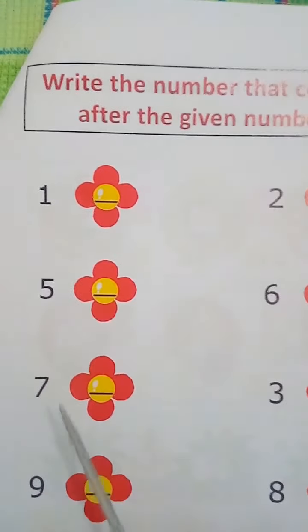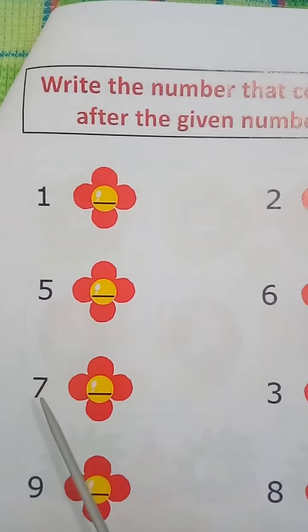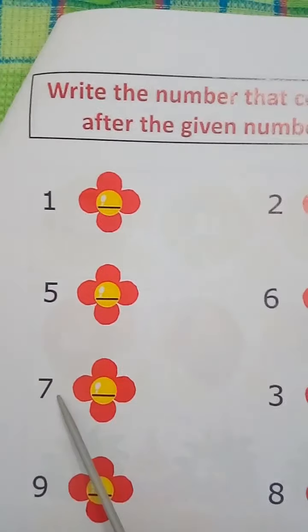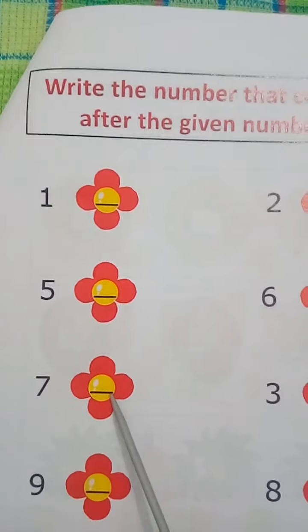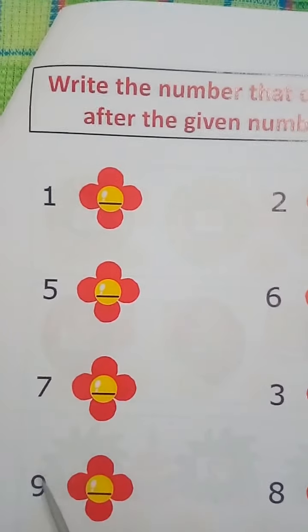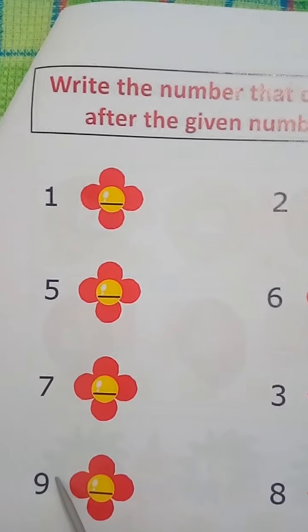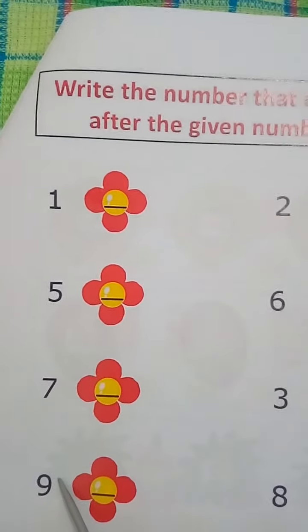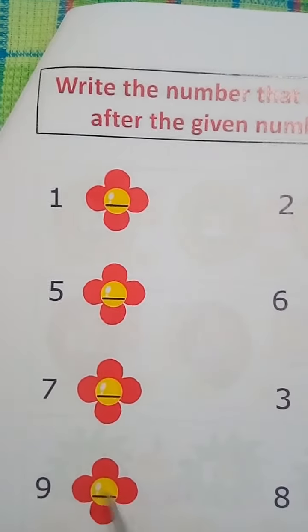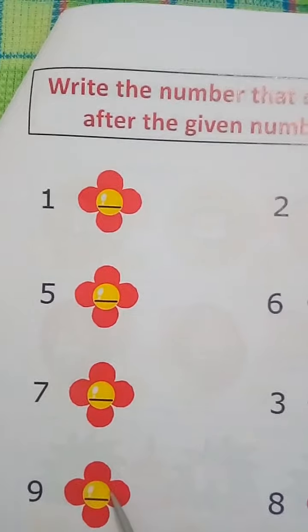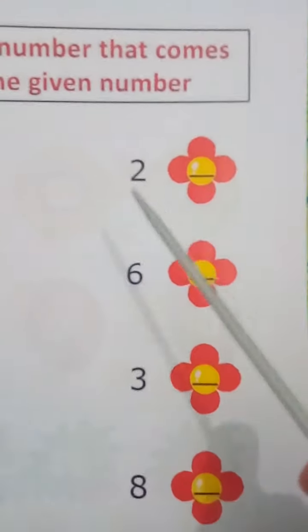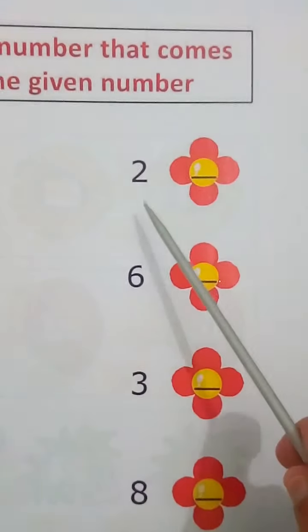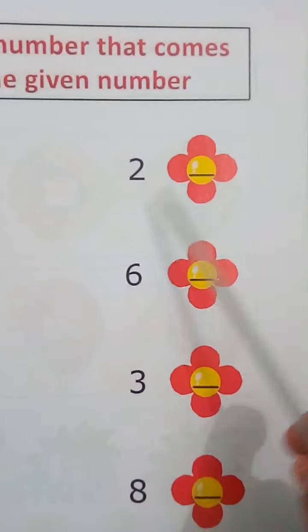What number comes after 7? It is 8. What number comes after 9? It is 10. What number comes after 2? It is 3.